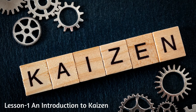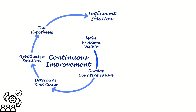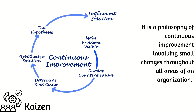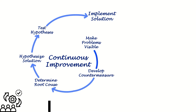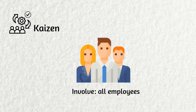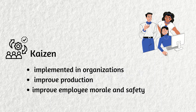Section 1: An Introduction to Kaizen. Kaizen is defined as continuous improvement — a philosophy of continuous improvement involving small changes throughout all areas of an organization. When applied to the workplace, Kaizen involves all employees, from executives to laborers and everyone in between. The Kaizen philosophy has been implemented in organizations around the world, used to improve production efficiency as well as employee morale and safety.